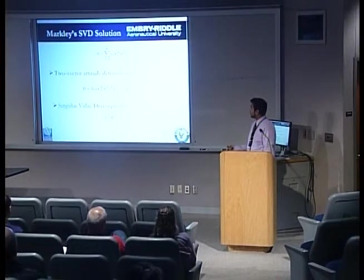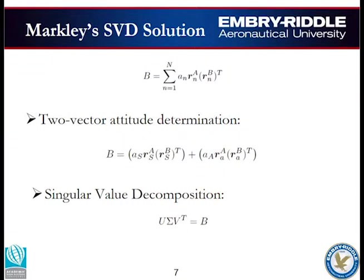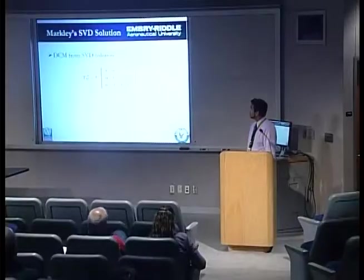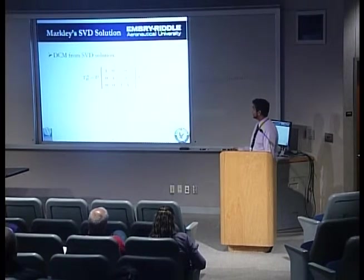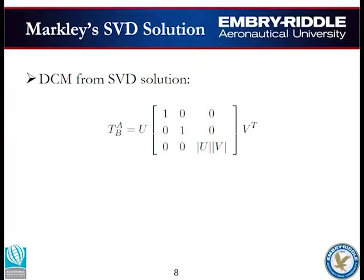Markley proposed rewriting Wahba's problem to determine a matrix B described by a summation equation. For our specific problem, we set N equal to 2 because we use the sunlight vector and the gravity vector, and rewrite that summation with subscript S for sunlight and subscript A for gravity. We then perform a singular value decomposition on matrix B to obtain orthogonal matrices U and V, where sigma is the diagonal matrix of singular values. The direction cosine matrix is obtained from U, V, and sigma, setting the diagonals to 1.